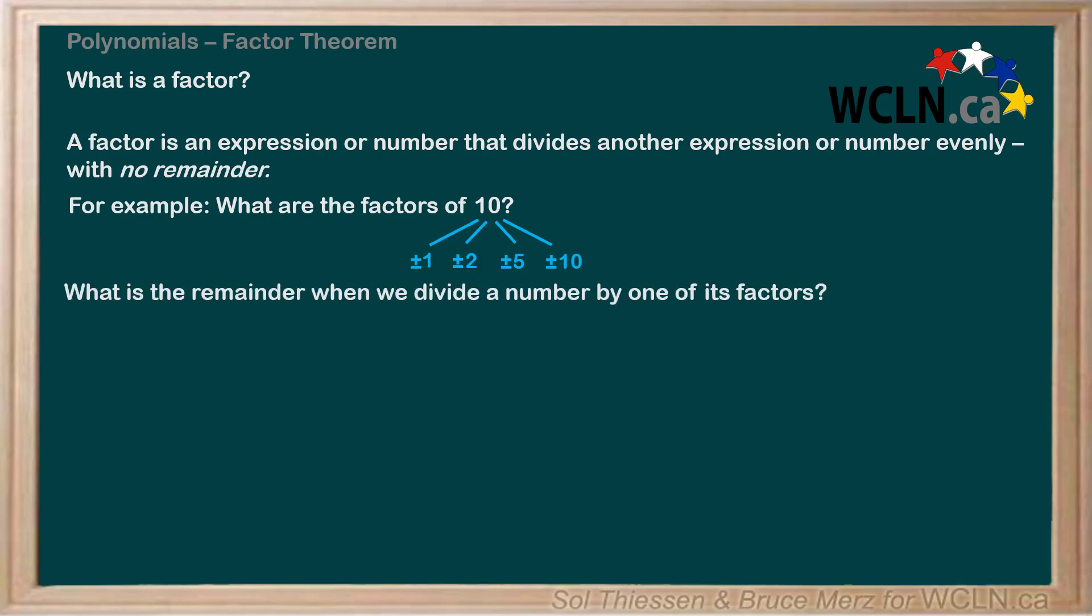What is the remainder when we divide a number by one of its factors? Remember that by the definition of factor, the remainder when we divide a number by one of its factors must be 0. For example, 10 divided by 2, which is one of its factors, yields a quotient of 5 with a remainder of 0. The remainder is always 0, because it divides evenly.